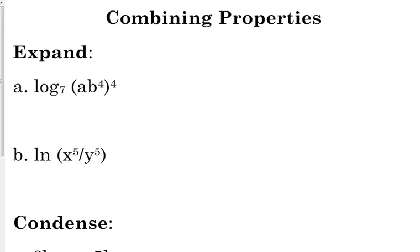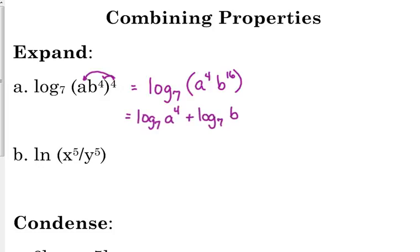So the first thing that we want to do when we expand this is, well, there are a couple of different things we can do. I think it's easiest to apply that exponent to both the terms inside the parentheses. So, when we do that, we're raising a power to another power, so we multiply so that's a to the 4th b to the 16th. Power to a power, you multiply, so 4 times 4 is 16th. Now, I'm going to split it into two logarithms, log base 7 of a to the 4th plus log base 7 of b to the 16th, and then I'm going to use my power property to move those powers to become coefficients. 4 log base 7 of a plus 16 log base 7 of b.